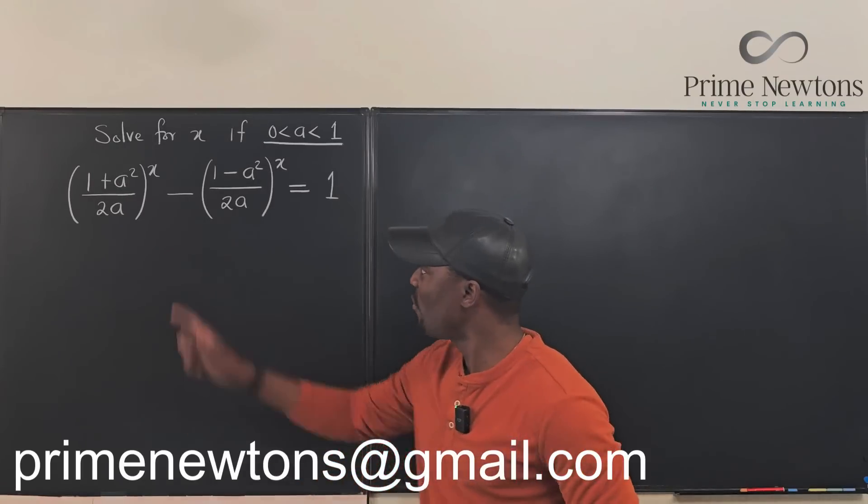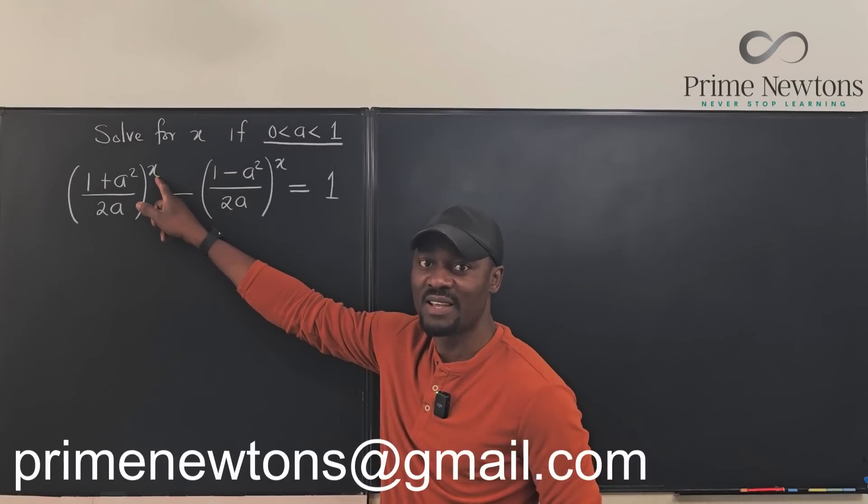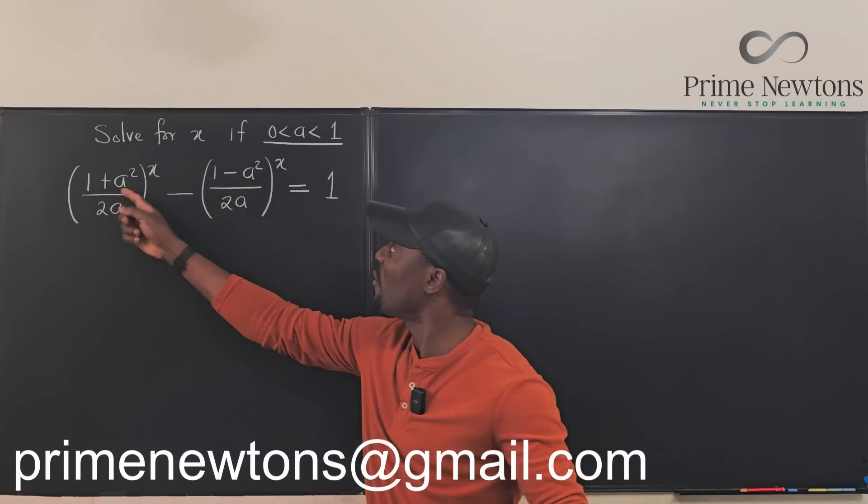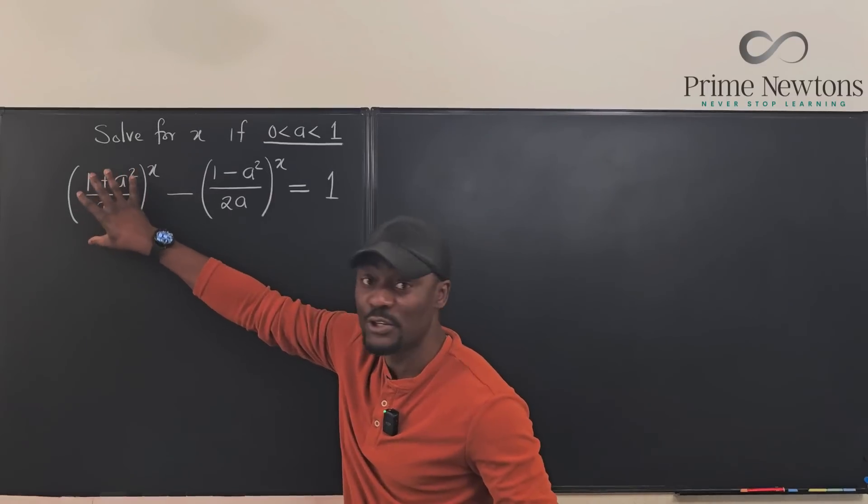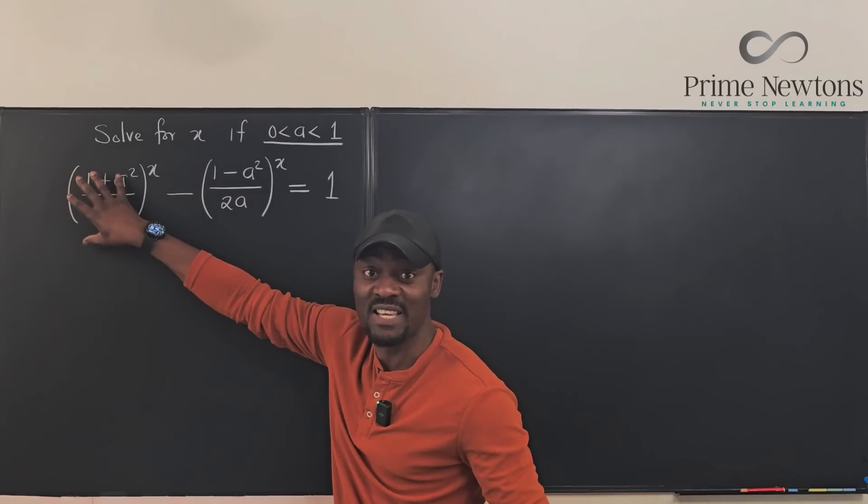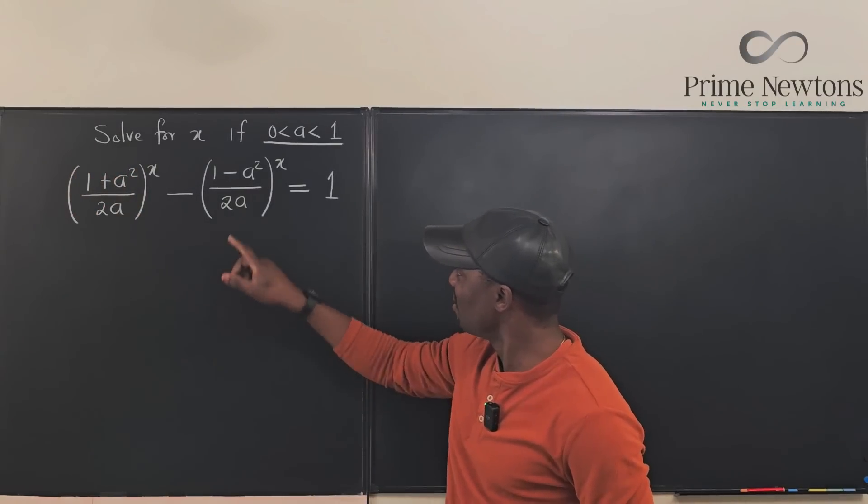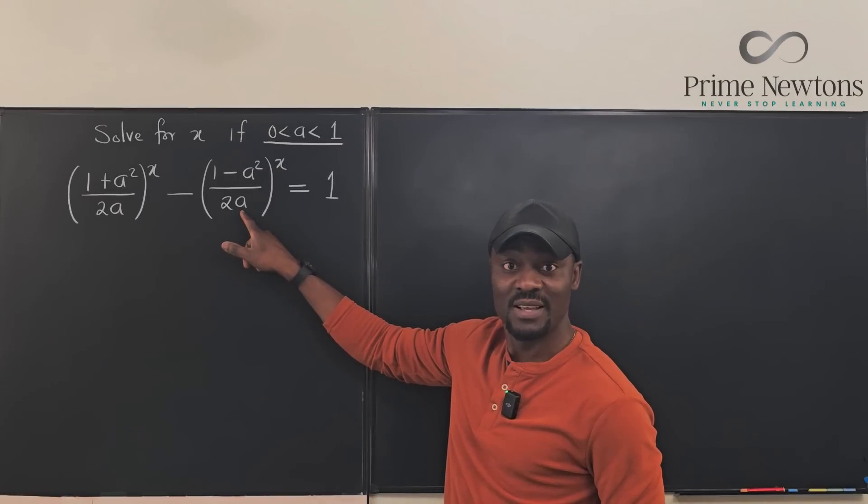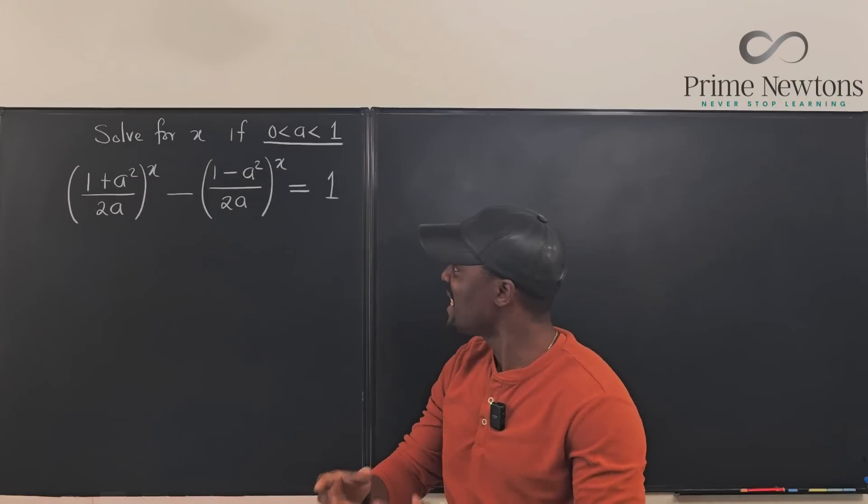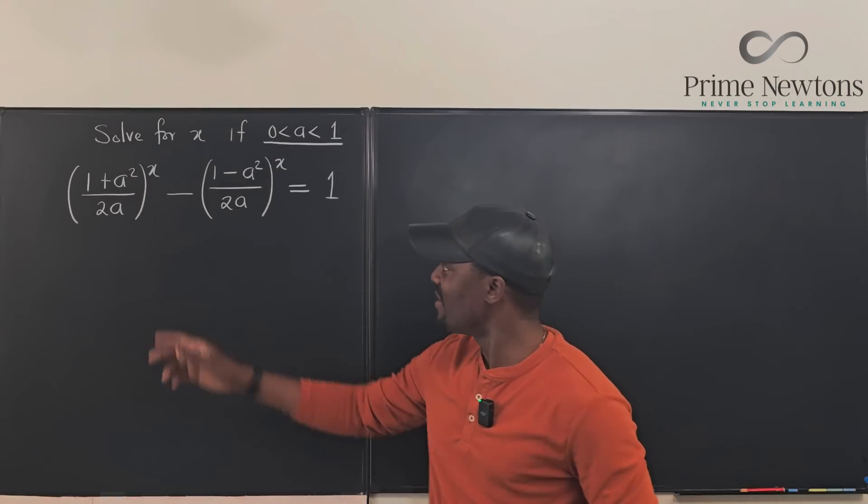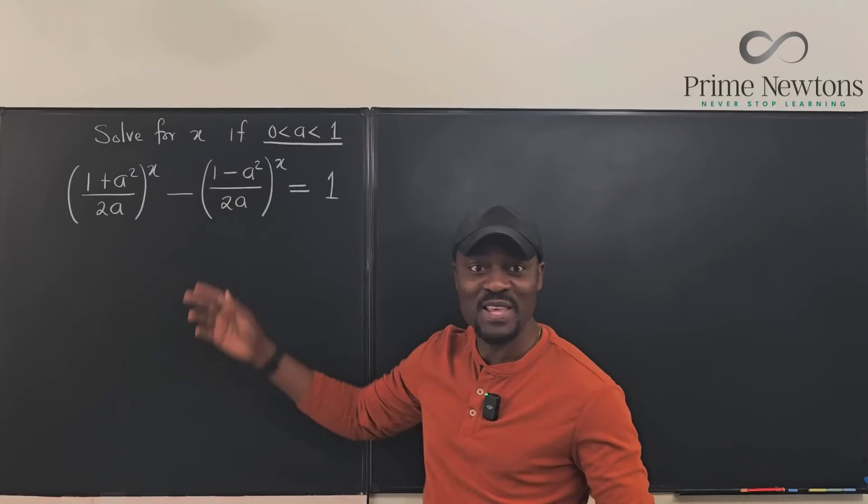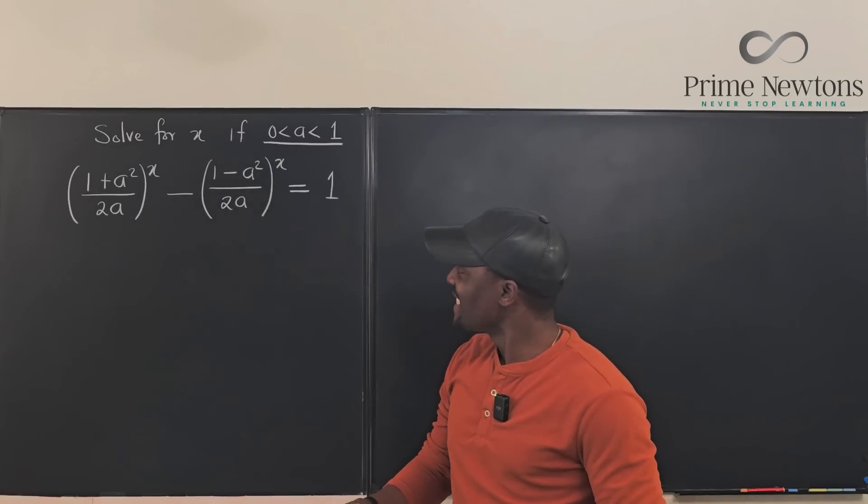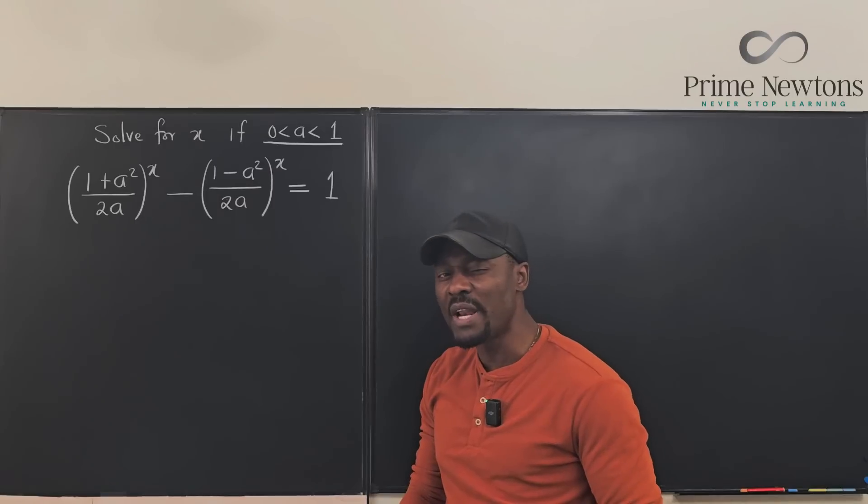Now see what happens. We don't know what this exponent is and that's what we're looking for. It doesn't matter how hard you try to simplify what is in here, it does not become this. It just stays strangely different and there is a subtraction here but you cannot subtract. You cannot factor out the exponents.